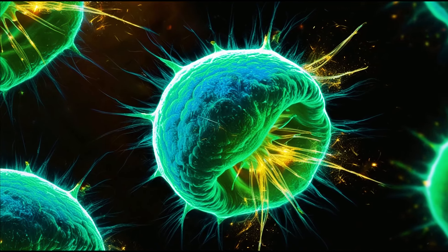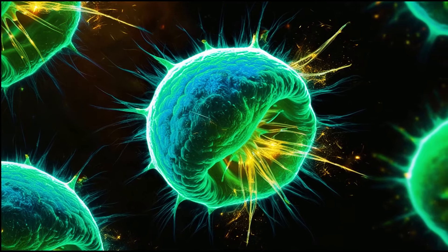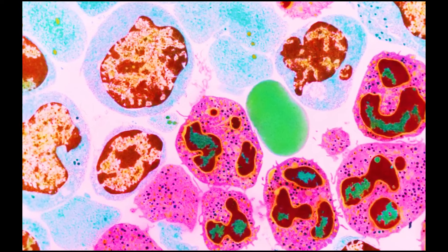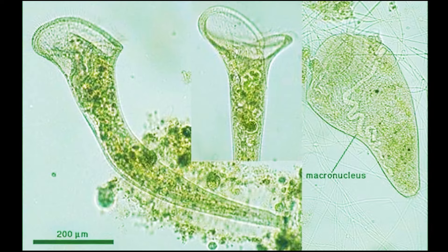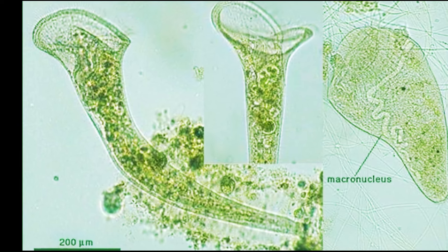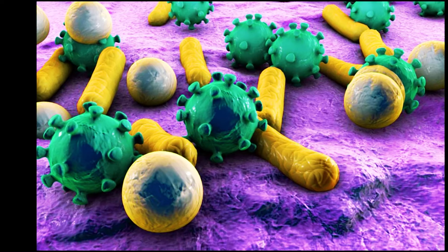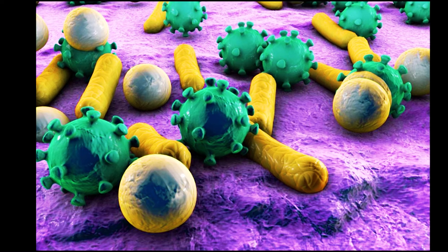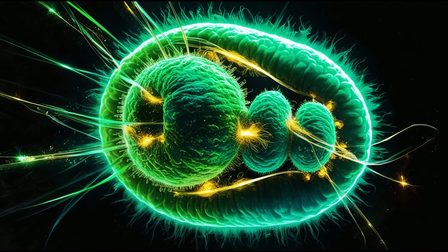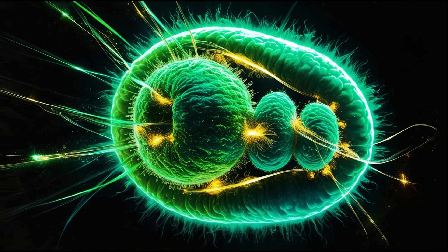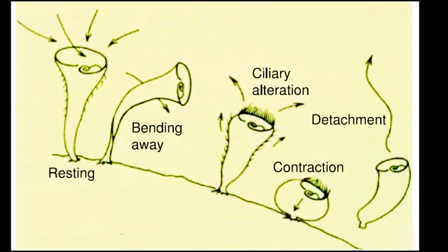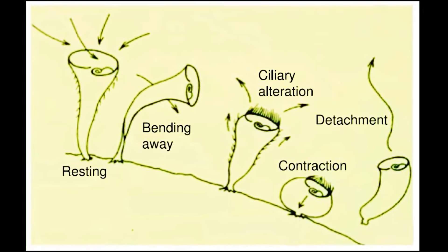For billions of years, life on Earth remained microbial, dominated by single-celled organisms such as bacteria, archaea, and protists. These microscopic lifeforms inhabited virtually every habitat on the planet, from the deep sea to extreme environments like hot springs and polar ice caps. They developed an astonishing array of metabolic strategies, from photosynthesis to chemosynthesis, allowing them to thrive in diverse and often harsh conditions. The proliferation of single-celled organisms marked a crucial phase in Earth's biological history, as their ability to adapt and evolve rapidly provided the raw material for evolutionary experimentation, driving innovations that would ultimately lead to the emergence of multicellular lifeforms.